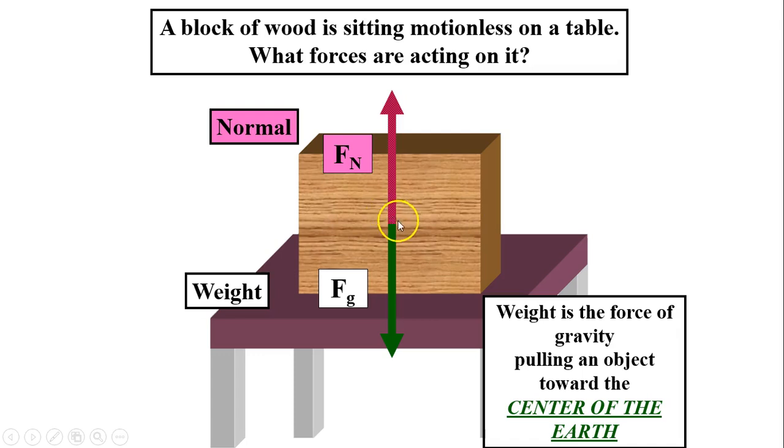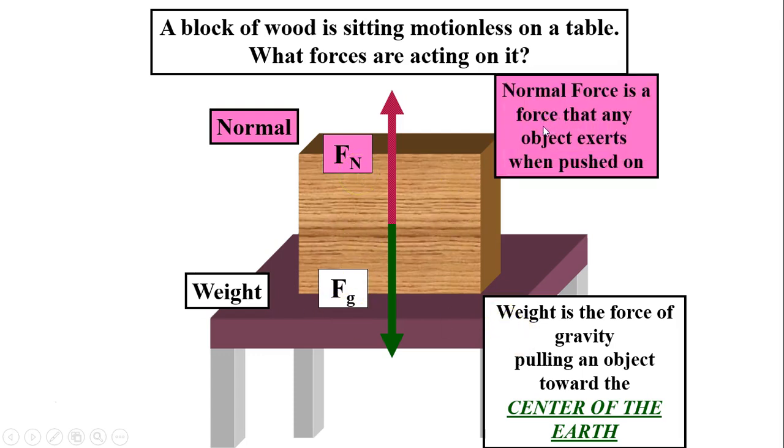Another force is upward. This is called normal force. This is the result from the table pushing the box up. Normal force is the force that any object exerts when pushed on, so the table is pushing the box up.